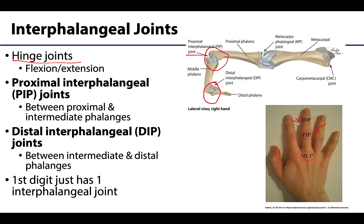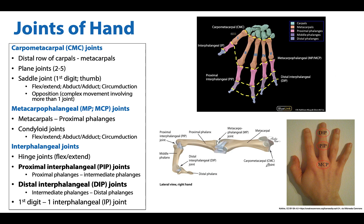By the way, I love saying PIP or DIP. Recall that there is no intermediate phalanx in the thumb, so there is just the one interphalangeal or IP joint. Excellent — we have reached the summary slide, which is your one-stop shop for the foundations of the joints of the hand. Please review and reach out if you have any questions. Have a great rest of your day.